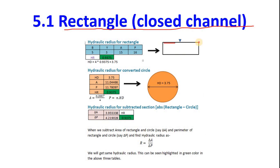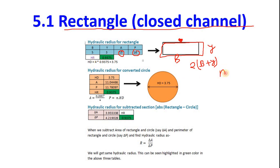For a full-flowing rectangular closed channel, suppose b = 5 and depth y = 3 (since it is full-flowing, depth equals the height of the rectangle). Area = b×y = 15. Perimeter = 2×(b + y) = 2×(5 + 3) = 16. Hydraulic radius = A/P = 15/16 = 0.9375. Hydraulic diameter = 4 × 0.9375 = 3.75.